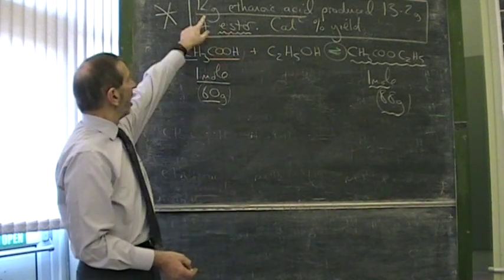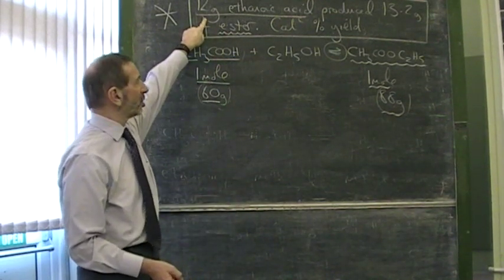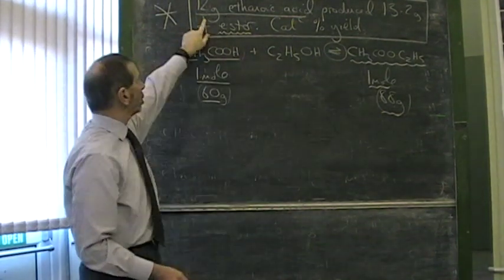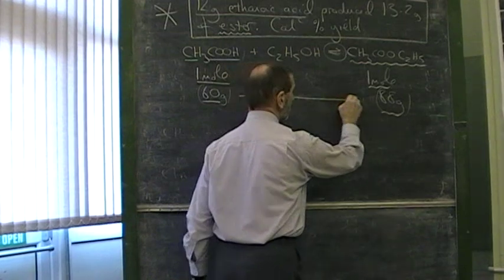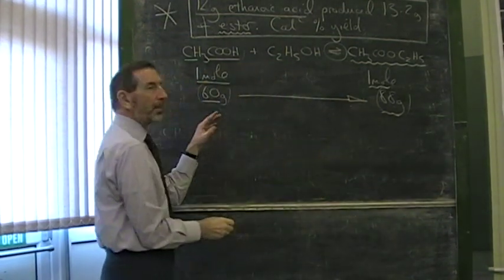So let's work out, first of all, how much we should get, how much ester should we get, starting with 12 grams. Well according to this, 60 grams should give that. If this was a complete success, 60 grams of acid should give 88 grams of ester.